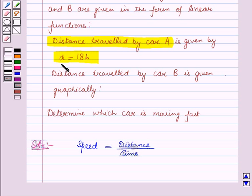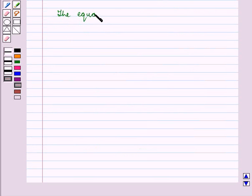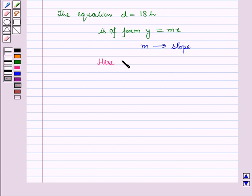Now, in function 1 we are given a linear function showing a relation between hours h and distance travelled d. The equation d equals 18h is of the form y equals mx whose graph is a straight line passing through origin with slope m. So here slope m is equal to 18.